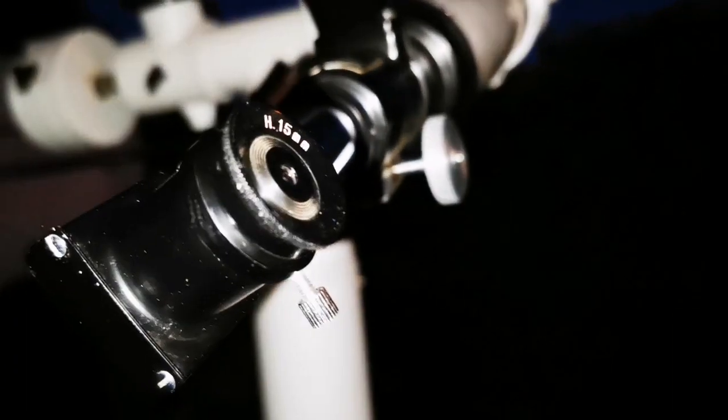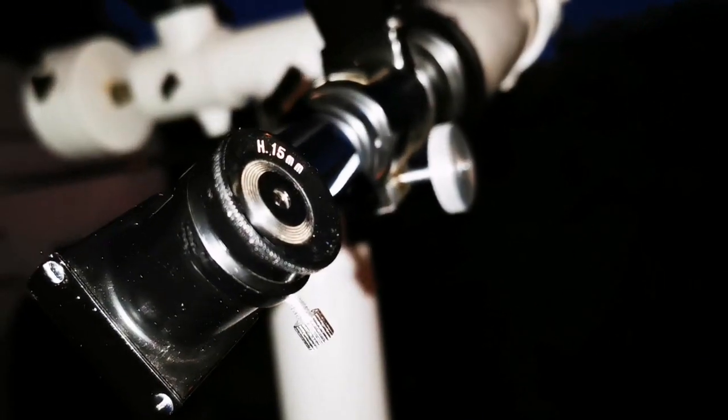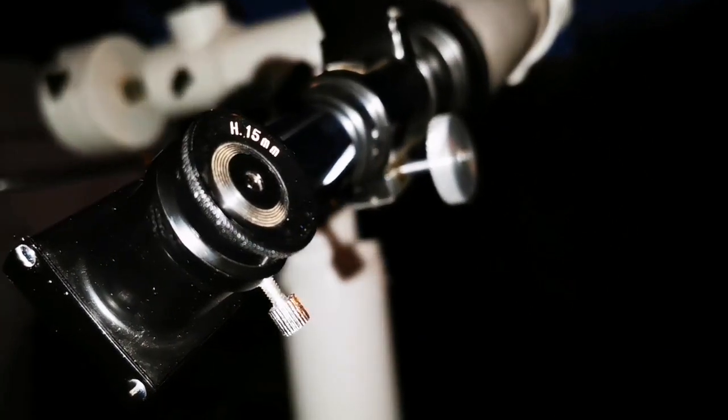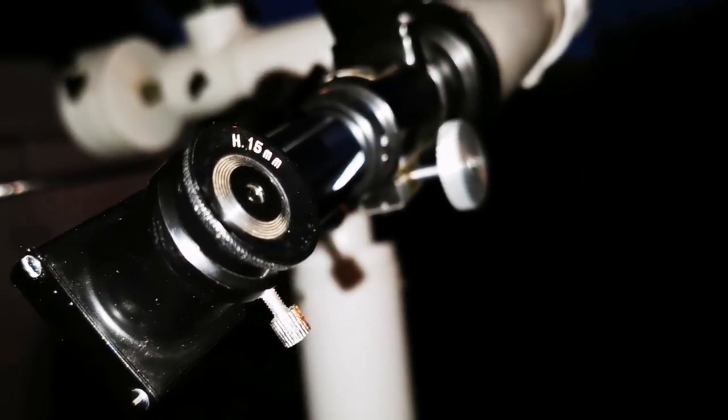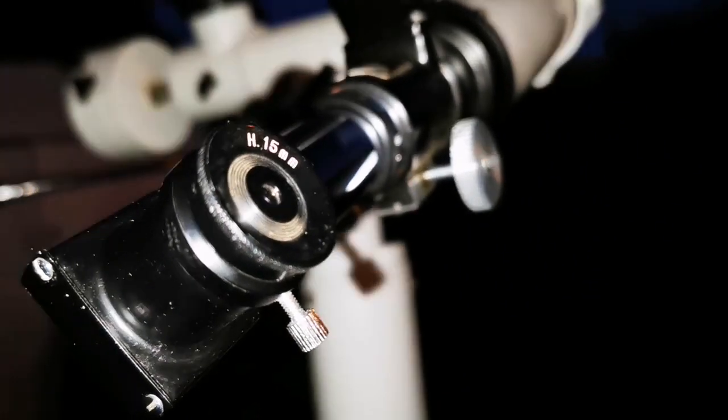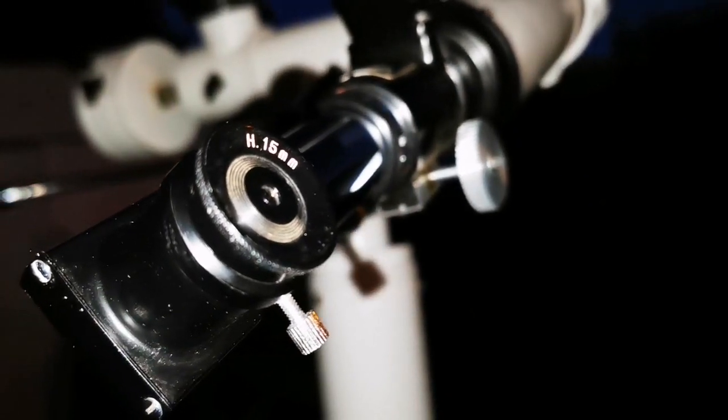On Jupiter, it shines. You can see the two cloud belts and a little bit more detail in the north and south. It's just tempting to go and bring more. This is 15mm, so I have to bring another one, probably.